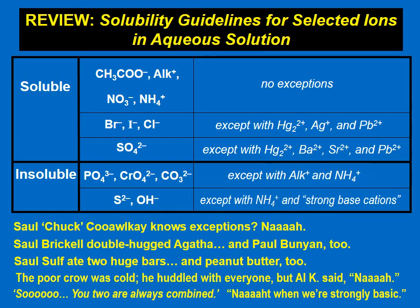Those mnemonics are here at the bottom: 'Sol Chukkualke knows exceptions? Nah.' 'Sol Brackel double-hugged Agatha and Paul Bunyan too.' 'Sol Sulfate two huge bars and peanut butter too. The poor crow was cold. He huddled with everyone. But Al K said, nah.' 'So, you two are always combined. Not when we're strongly basic.'